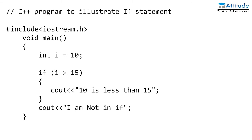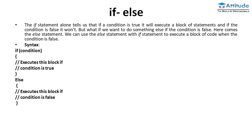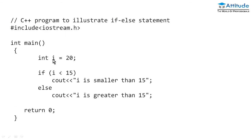Simply you understand the if statement. Next is the if-else statement. If the condition is satisfied, it comes into the if block; if the condition is not satisfied, it comes into the else part. Here, the value of i is 20. '20 is less than 15' — is this condition true or false? Obviously 20 is not less than 15, so it goes to else. The output is 'I am greater than 15'. This is the output of this program.